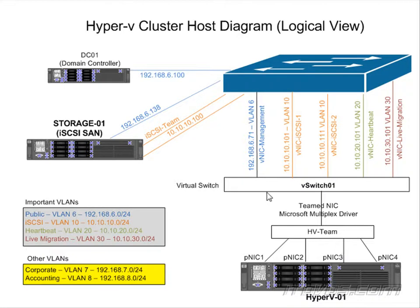Before, we would waste a lot of bandwidth — for example, putting the management network on two teamed adapters when the management network doesn't use much bandwidth at all, wasting at least a NIC and a half worth of bandwidth that could be used for live migration or virtual machine traffic. Virtual machines will be connected to the virtual switch, and we configure the virtual NIC on each VM with a VLAN so it can communicate out on the network using the HV-team bandwidth. We can also configure quality of service per VM NIC to ensure each has enough bandwidth.